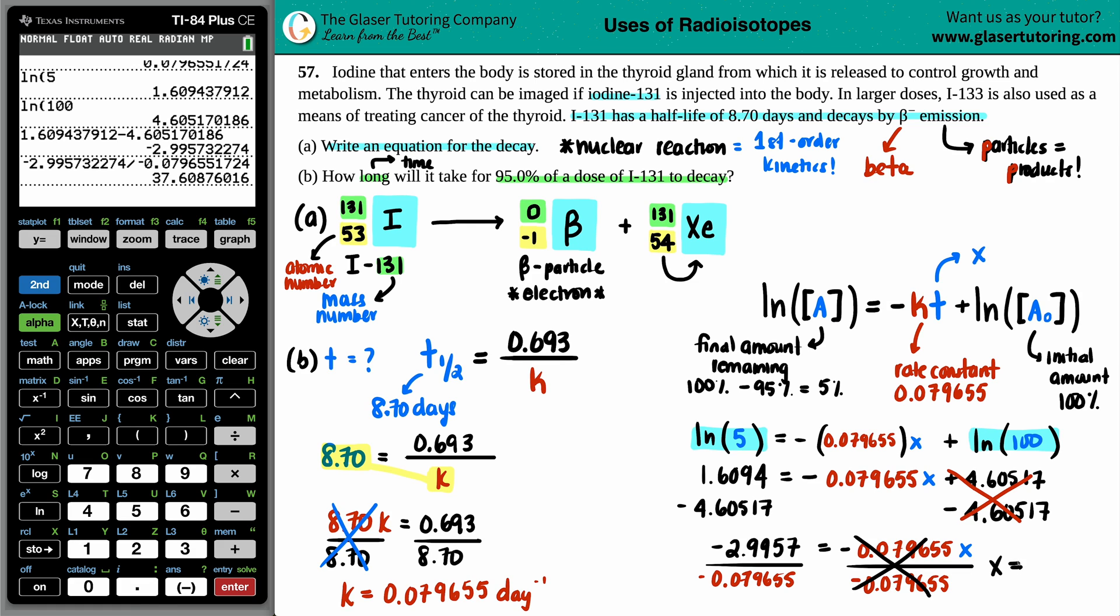So x, which is the time, maybe I can bring this over a little bit. Here we go. X equals 37.6. And what unit was this in? Half-life was in days. So this is going to be in days as well. So 37.6 days. So after more than a month, more than 31 days, 37 days, you're going to still have iodine in your body. You're going to have 5% left, but that's still, that's still some percentage. So there you go.